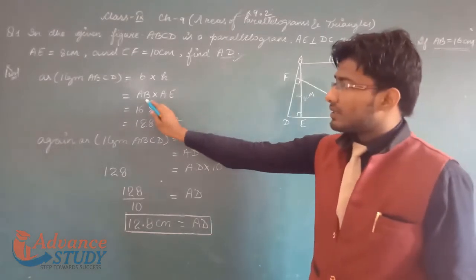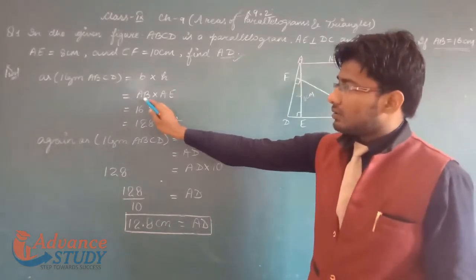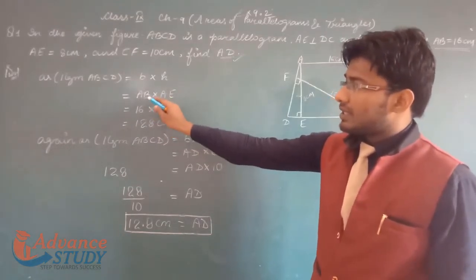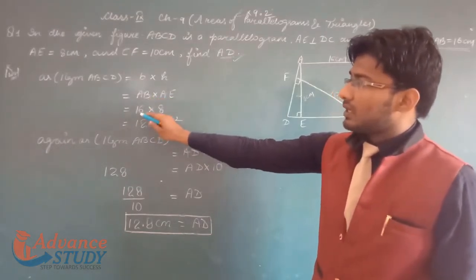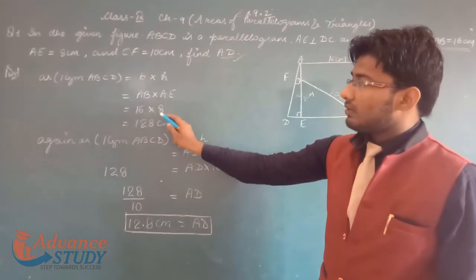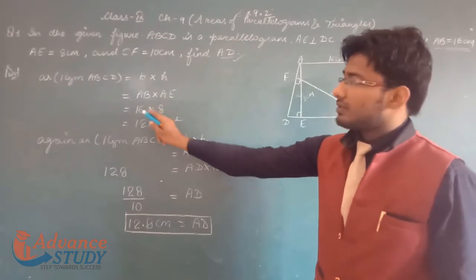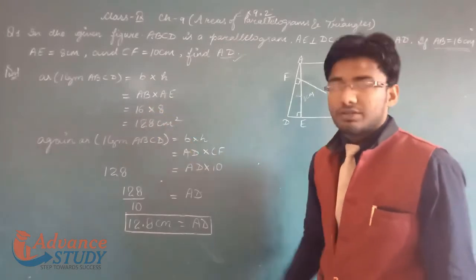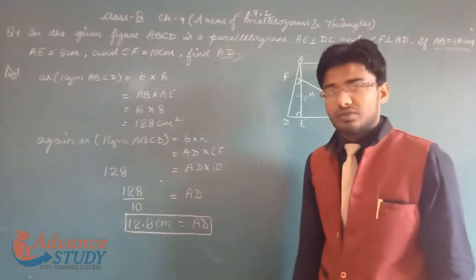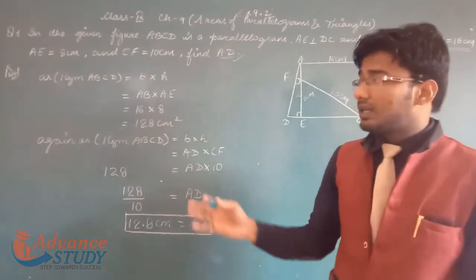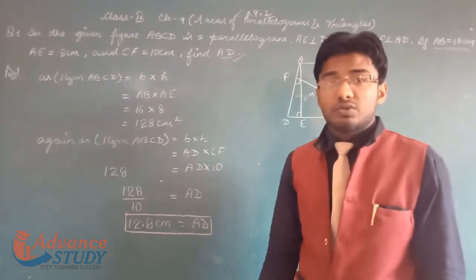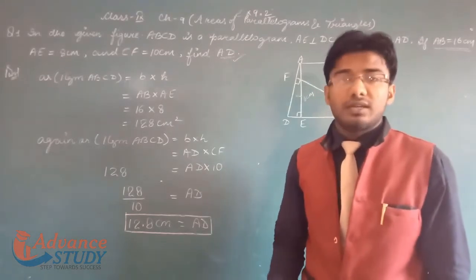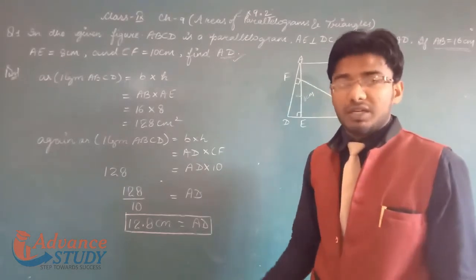Area of parallelogram = base × height. Base is AB = 16 cm, height is AE = 8 cm. So area = 16 × 8 = 128 cm². Area always comes in square units.